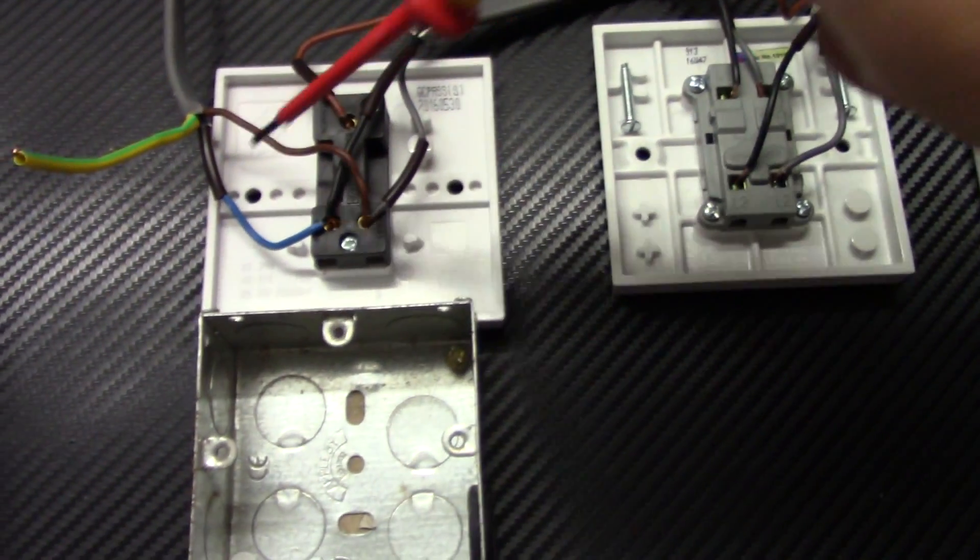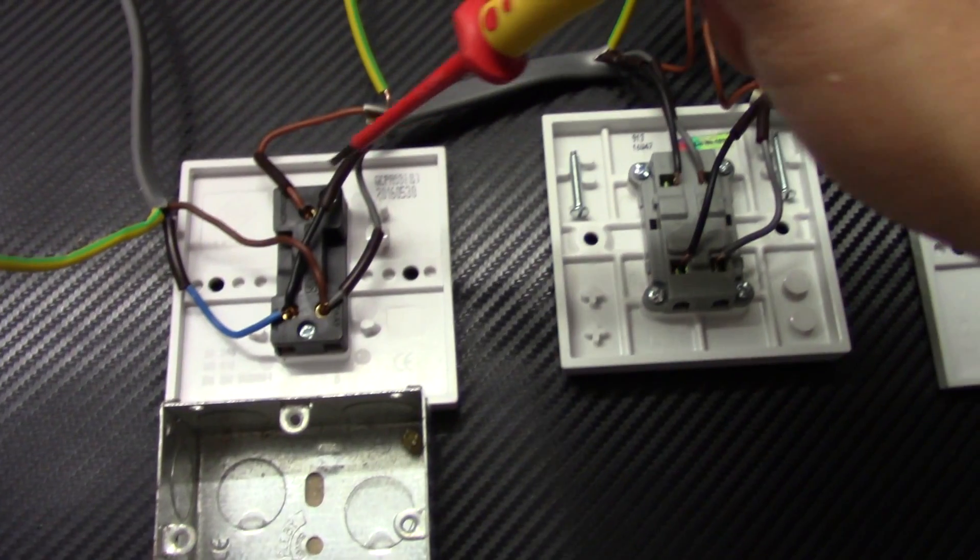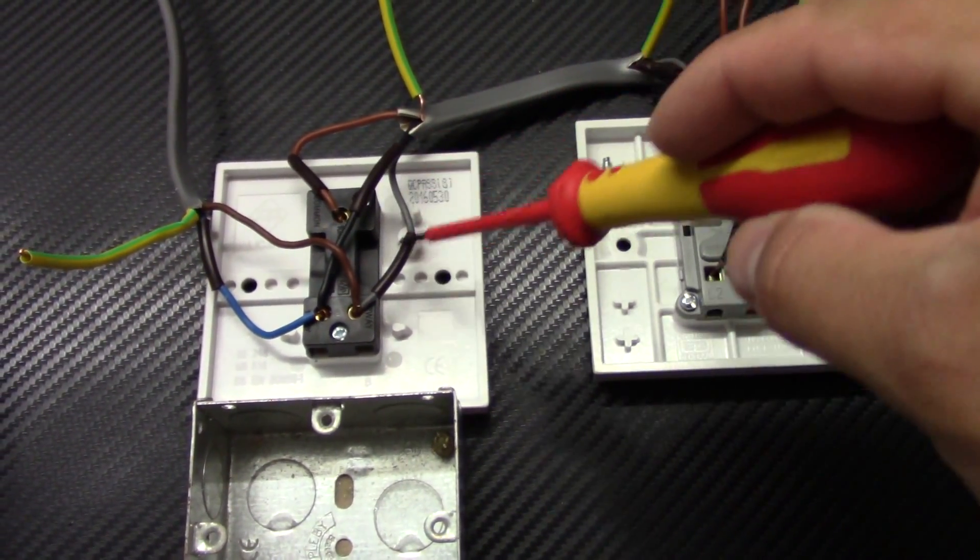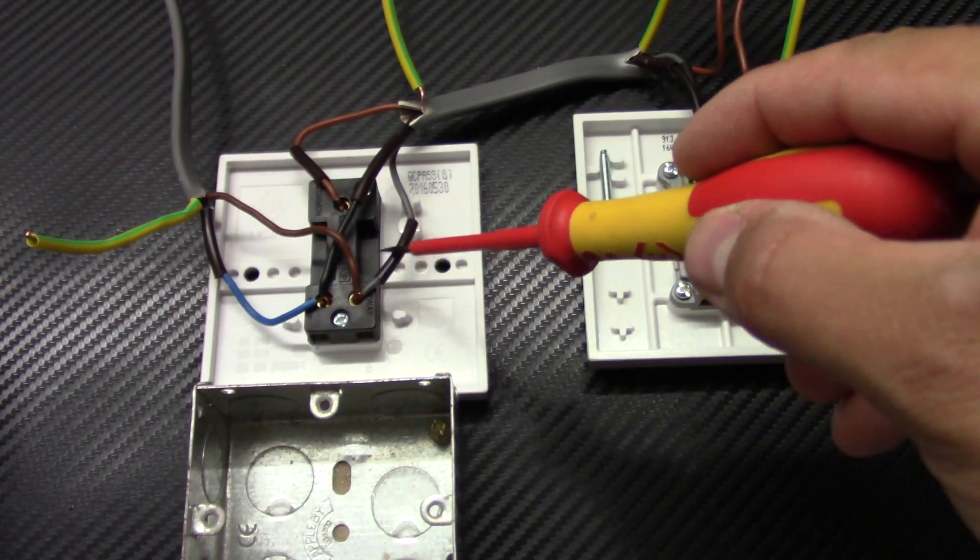Also remember all the blue, grey and brown wires. You need to put the sleeve on it. Because they are alive.